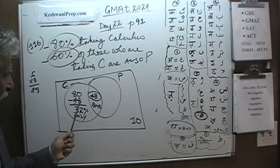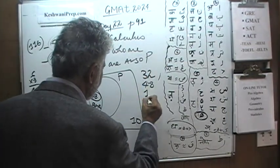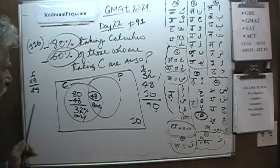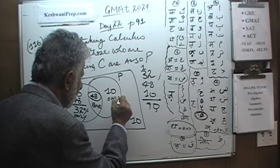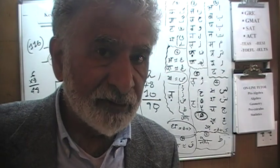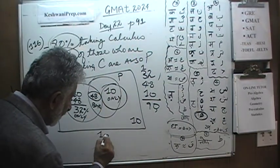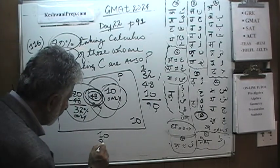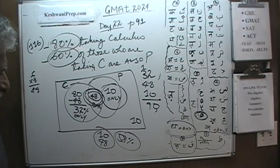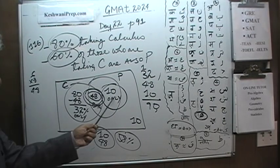We need to figure out what goes in the physics-only section. Adding up: 32 plus 48 plus 10 equals 90. So 10% of students are taking physics only. But that's not the final answer — the question asked what percentage are taking physics. Those taking physics fall in two categories: physics only (10%) and those taking both (48%). So the answer is 58% are taking physics: 48% taking both calculus and physics, and 10% taking only physics.